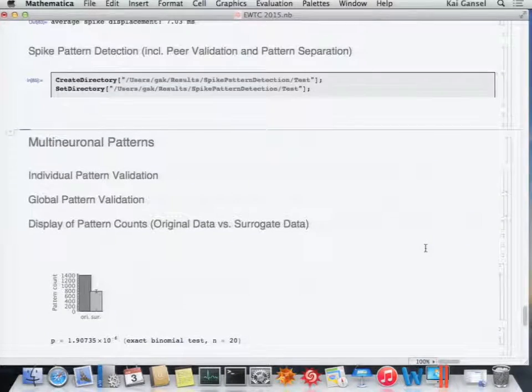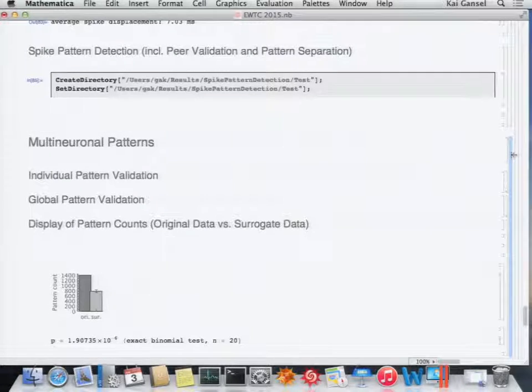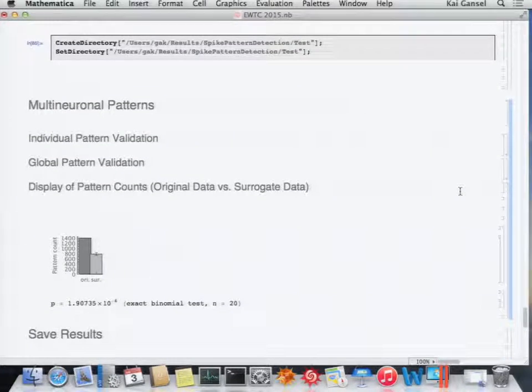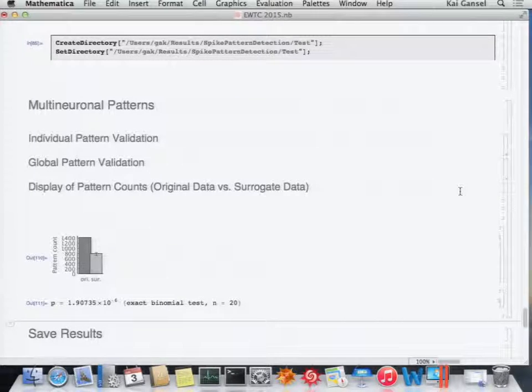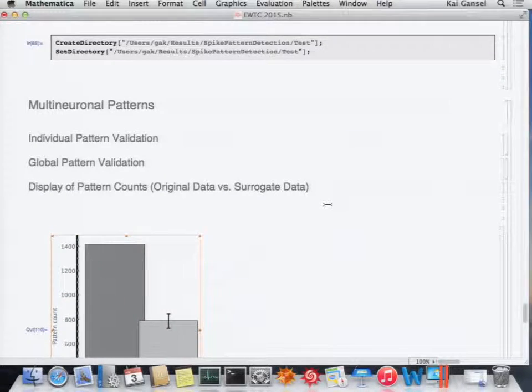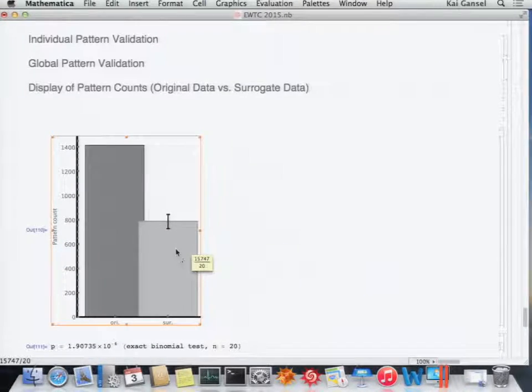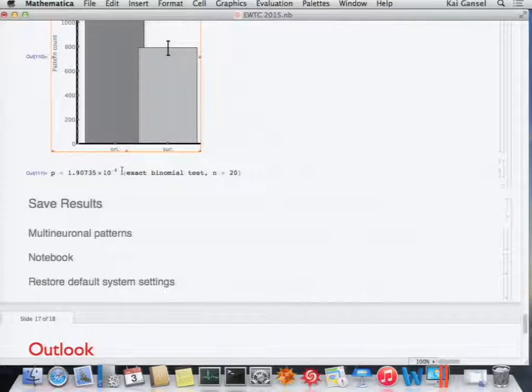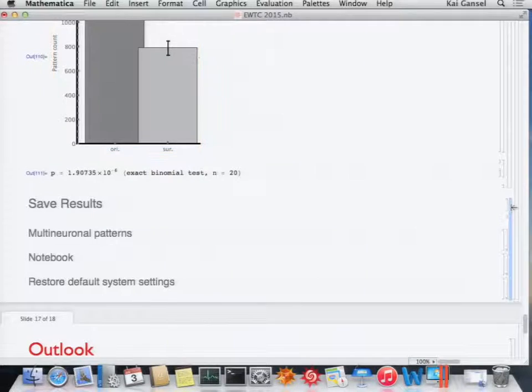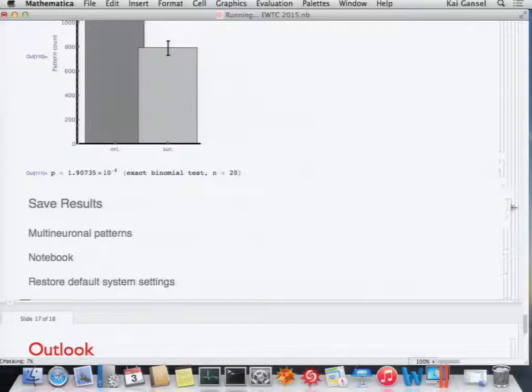Now we do the testing of each individual pattern and the second level statistical test. Get a graph out of it. Let's have a look. Hope you can see it. So in light grey is the surrogate data, in dark grey the original data. And you can, of course, clearly see as expected because I put them in. There are non-random patterns in the original data. Here's a statistical test saying that it's, of course, significant. And then we save the results as text files.